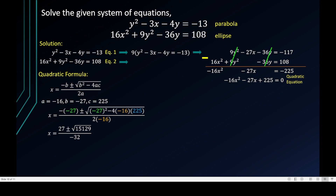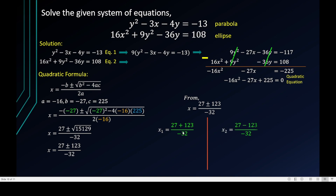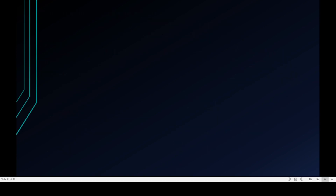The square root of 15129 is a perfect square equal to 123, so x = (27 ± 123) / (−32). Breaking this into two values: x₁ = (27 + 123) / (−32) = 150 / (−32) = −75/16, and x₂ = (27 − 123) / (−32) = −96 / (−32) = 3.